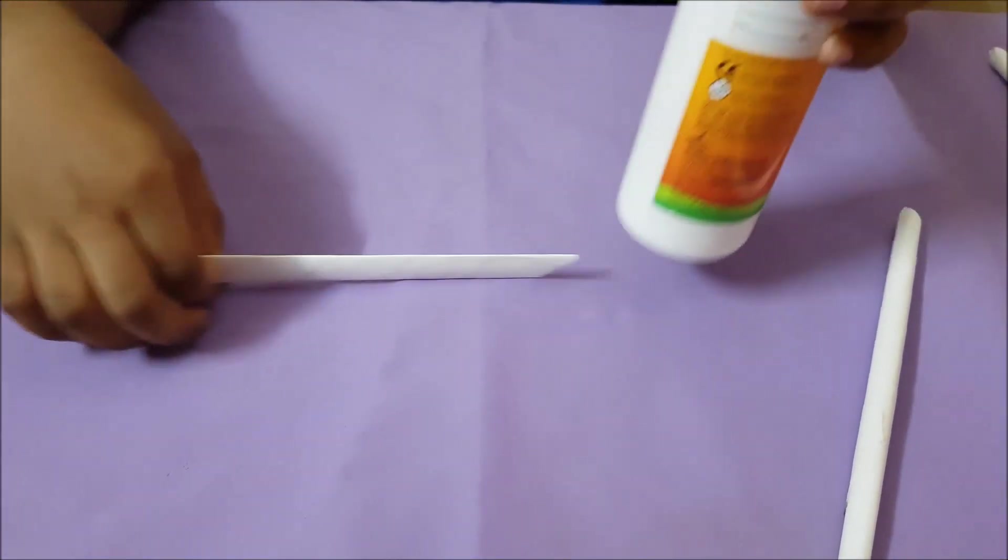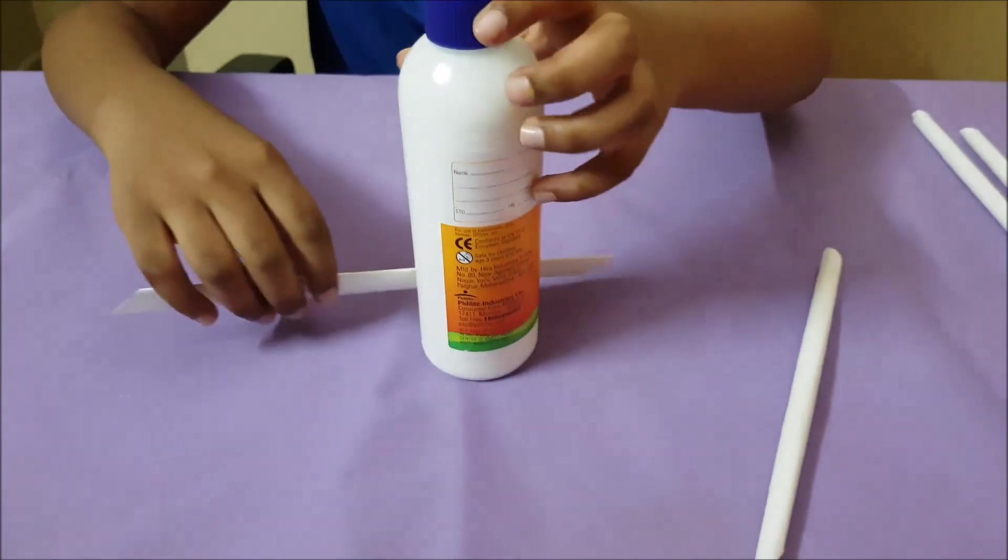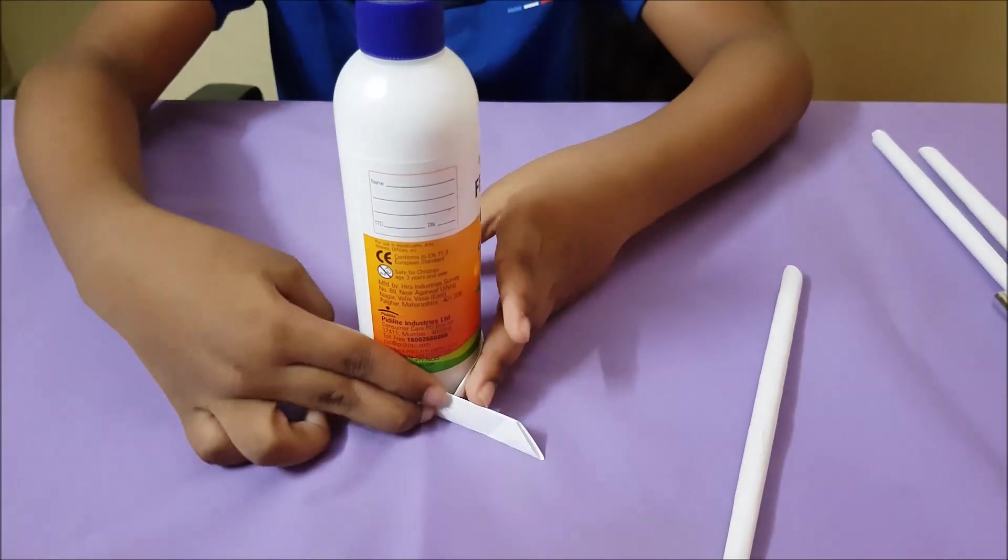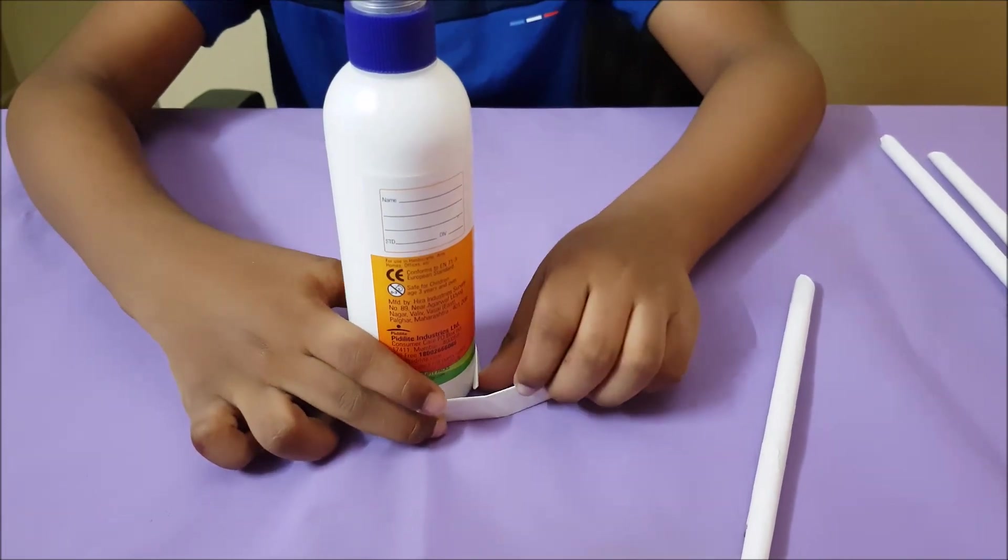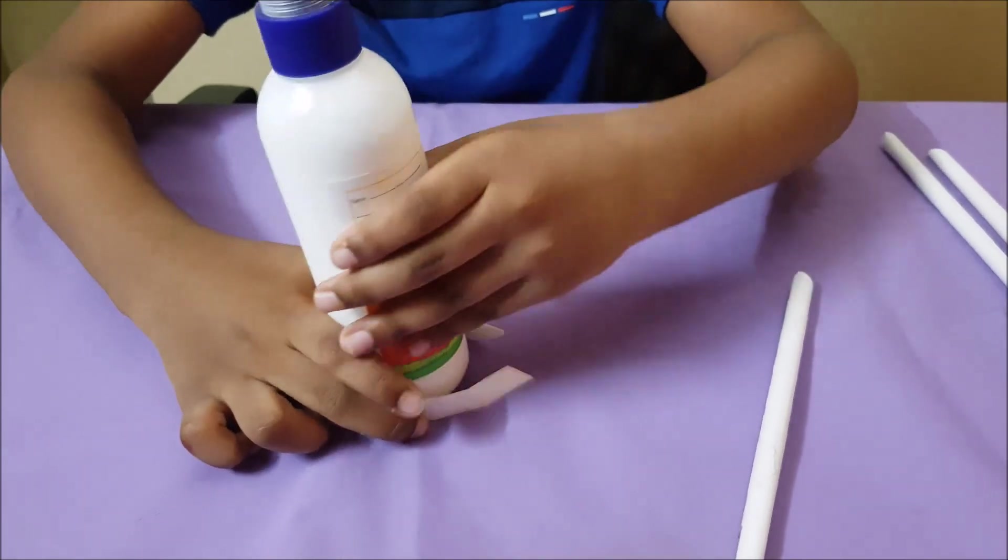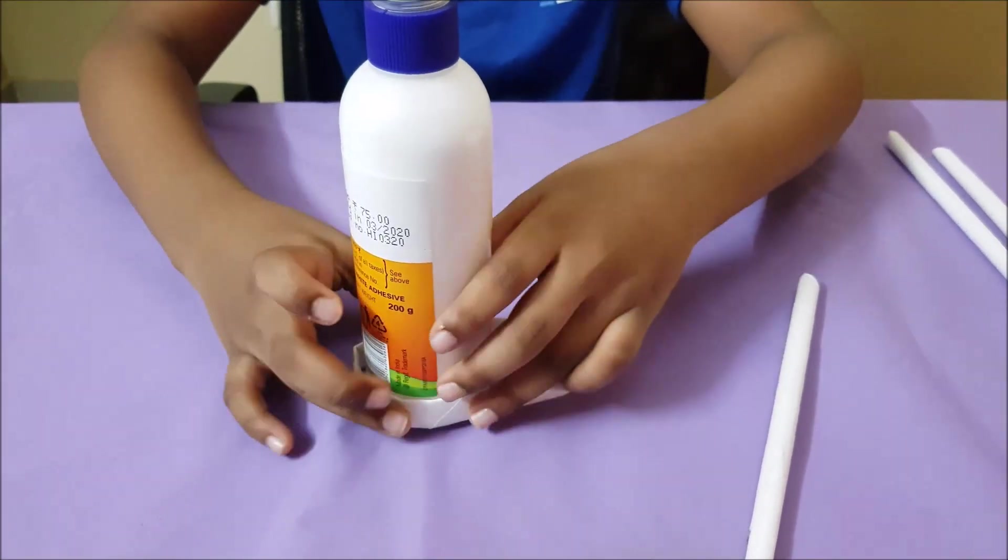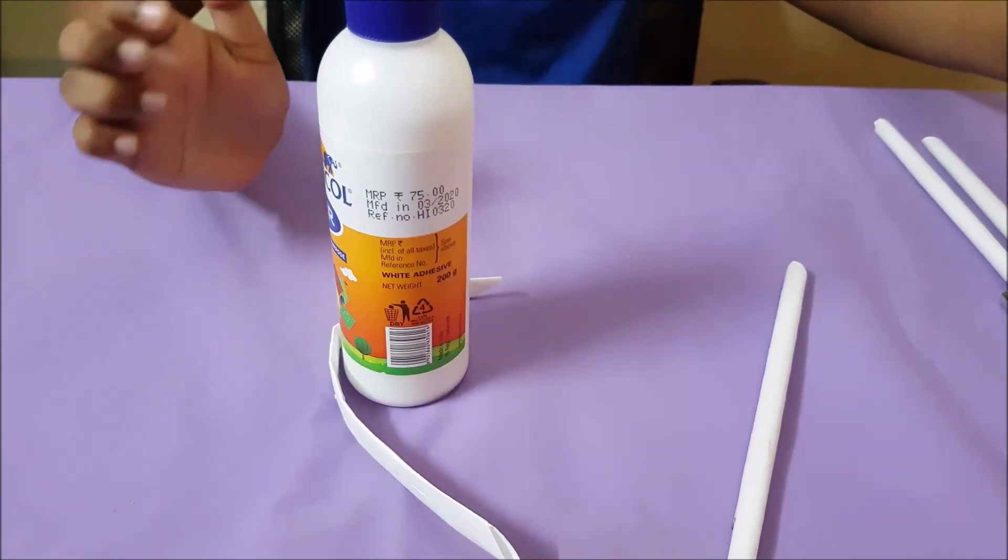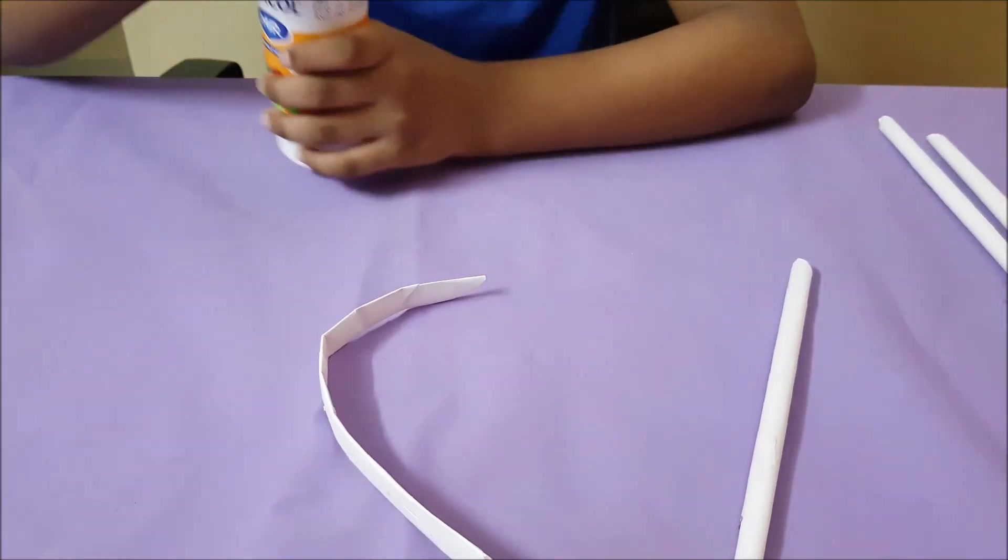For making it round, I'm taking a very cold bottle and you have to make it round like this. And wherever it ends, put glue there. It's ending here, so I will put glue over there.